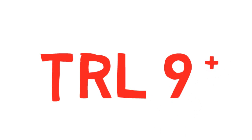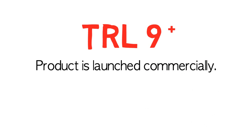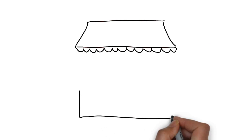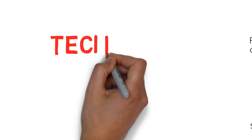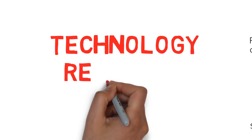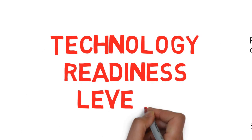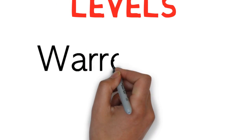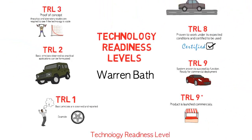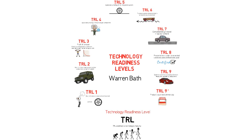Above TRL 9 is Introduction to the Market — the product is launched commercially. These are the Technology Readiness Levels, brought to you by Warren Barth. For more information, check out the description below. Thank you for watching!